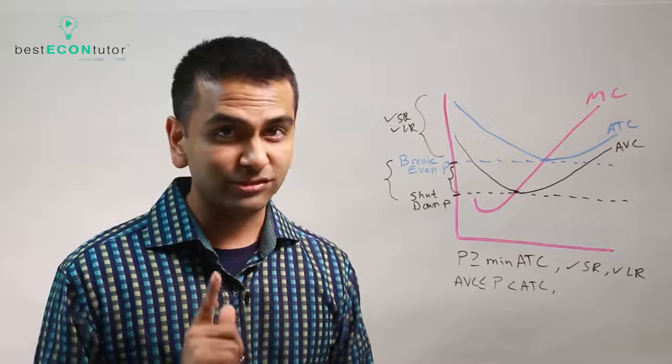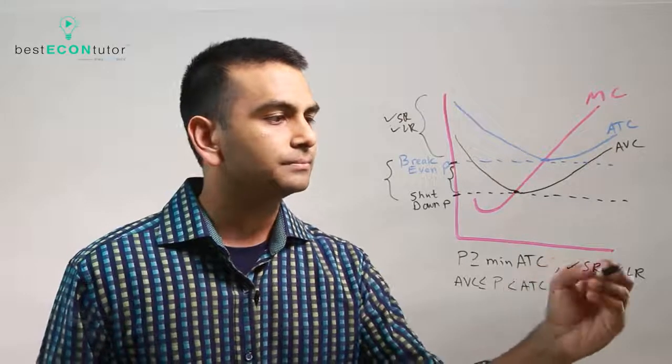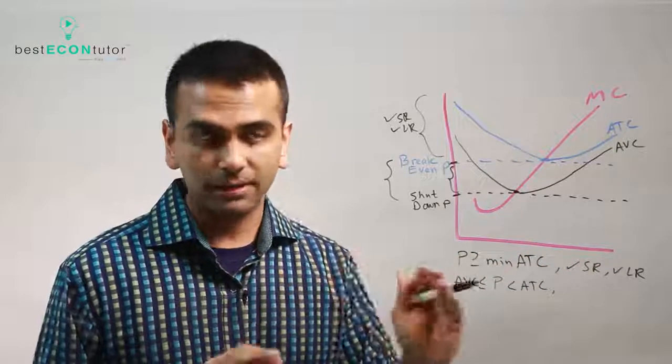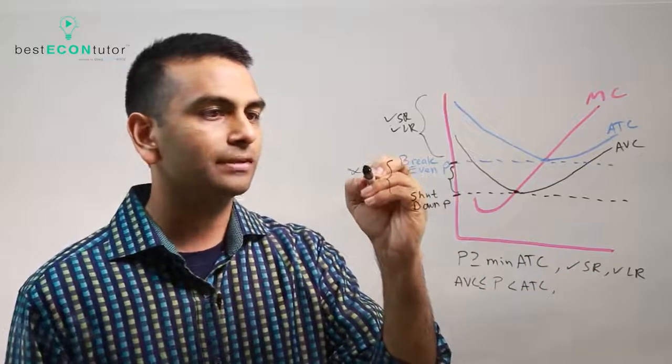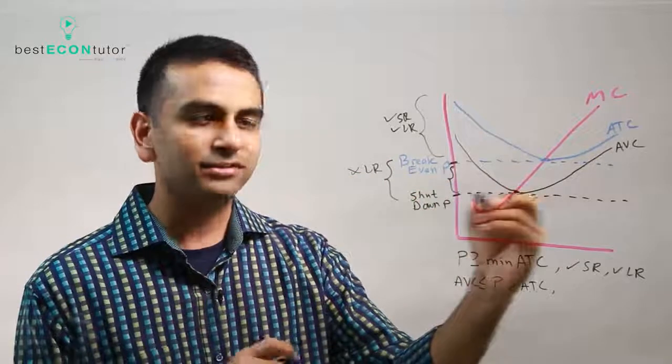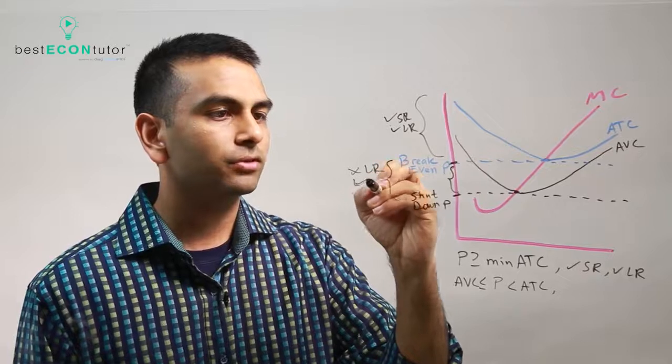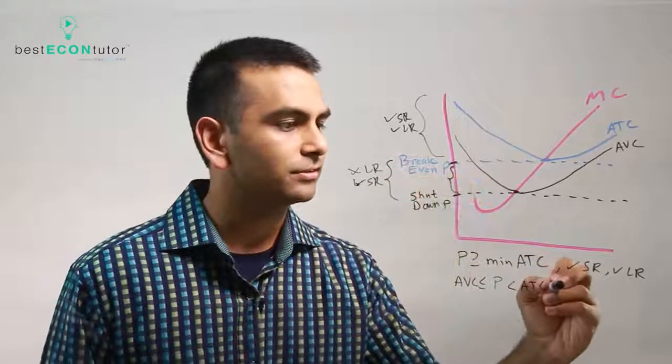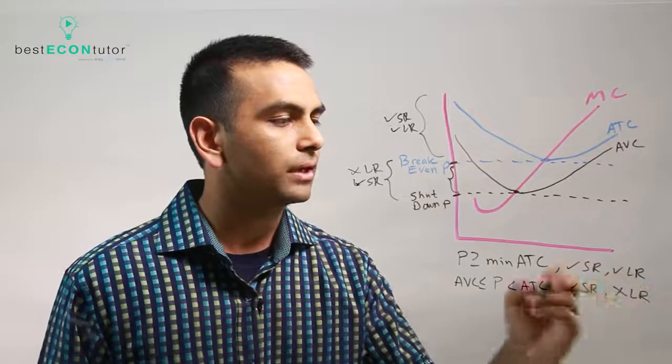But you sometimes might want to stay open in the short run, even if you're making a loss. Now, in the long run, however, if you're making a loss, you want to shut down, period. So if your price is less than ATC, you want to exit in the long run. But as long as your price is above the AVC, you're good to go for the short run. You're okay staying open. Even though it's a loss, you'll close on eventually. So here, you'd say open in the short run but you would exit out in the long run.